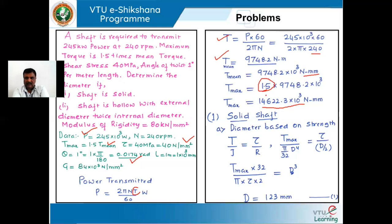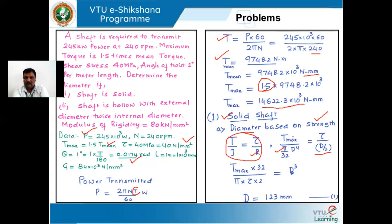For the solid shaft, first we find the diameter based on strength. Using the torsion equation T/J = τ/r, where J = πd⁴/32 for a solid shaft and r = d/2. Rearranging: T_max × 32 = π × τ × 2 × d³. Substituting the values of maximum torque and shear stress, we get the diameter d = 123 mm. This is the shaft diameter based on strength as the design criterion.